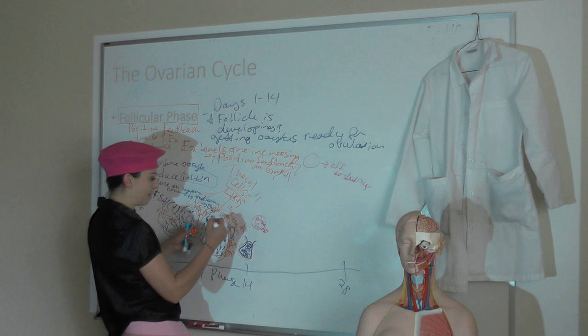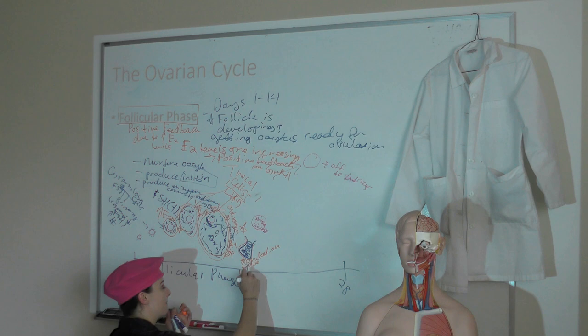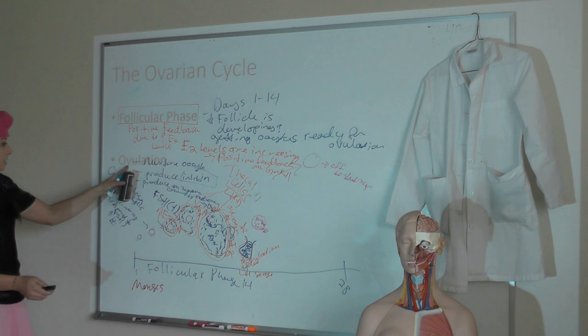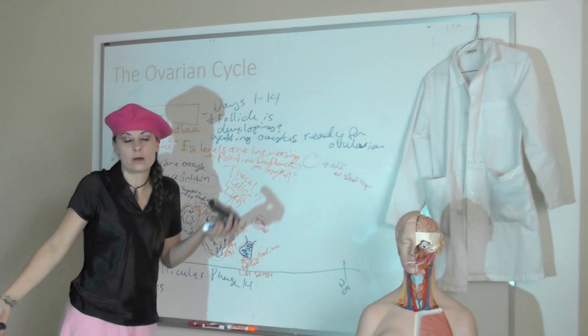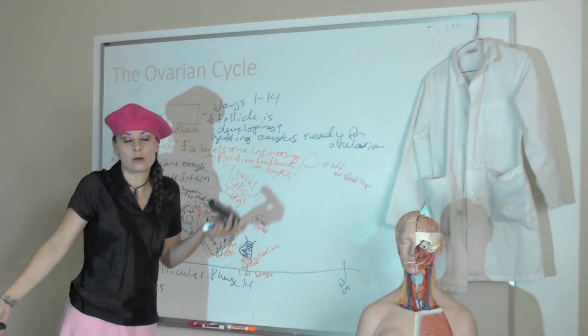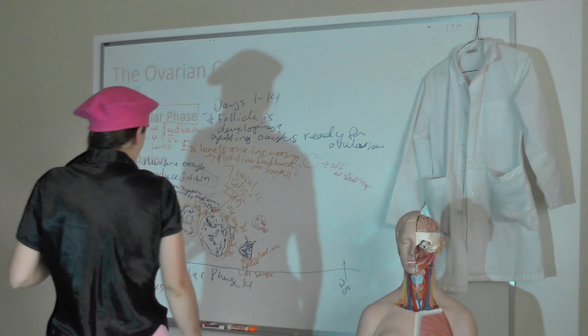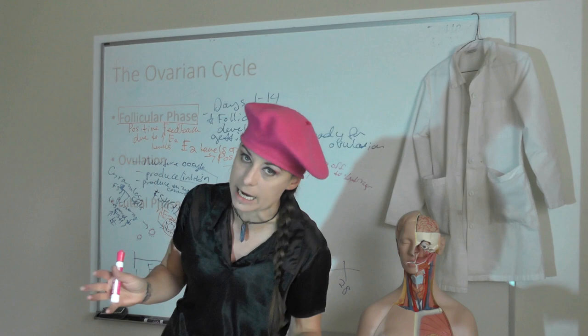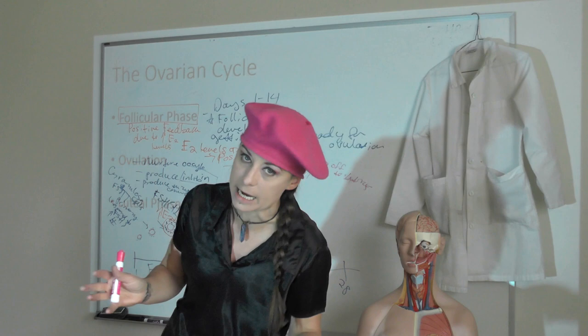What happens at day 14 is ovulation, and it's due to an LH surge. That's what's happening — on an average 28-day cycle. If you have a 26-day cycle, it's day 13 for you. After ovulation occurs, this oocyte is on its way off to the fallopian tube to hopefully get fertilized. We're not worried about the oocyte anymore — we're only worried about the cells that remain and the sex hormones they're producing.